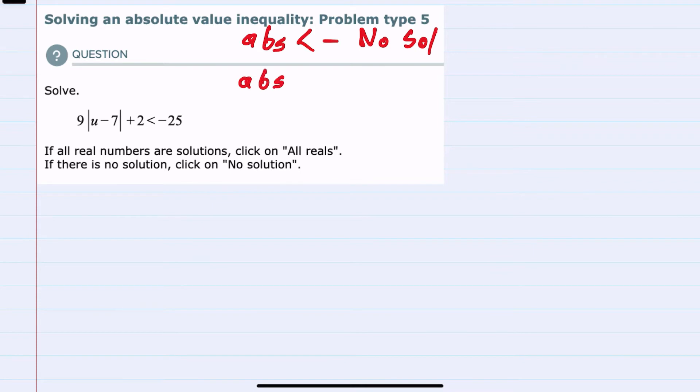Another sort of special situation could be if the absolute value were greater than a negative number. This would be all reals, and all reals because since absolute values are always positive, they're always going to be greater than negative numbers. So those are the two special situations.